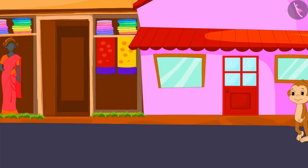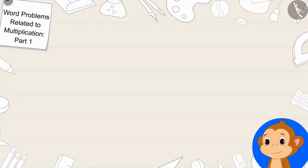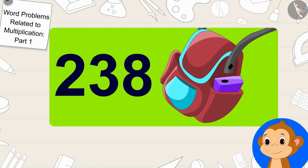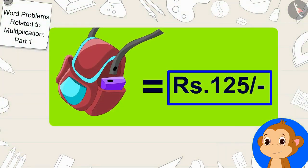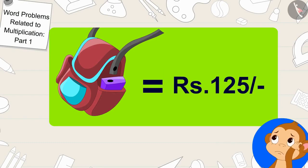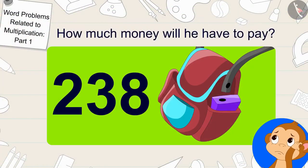Babban reached the city to buy some items for his new shop. First Babban went to buy 238 bags. The cost of each bag is 125 rupees. Now Babban is thinking how much money will he have to pay.